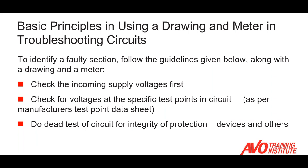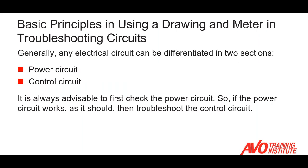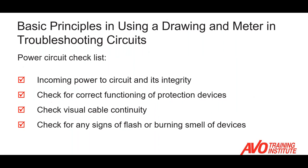We do a dead test of the circuit for integrity of the protection devices. In a dead test, or de-energized test, we want to check for continuity — we never want to check for continuity on an energized circuit. If it's not possible to perform the dead test, we need to connect the supply to the circuit and do a live test. Generally, our electrical circuits can be divided into two sections: the power section and the control section. It's always advisable to first check the power circuit; if that works as it should, then we can troubleshoot the control circuit.